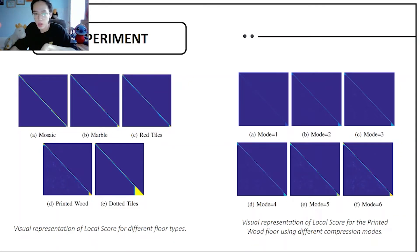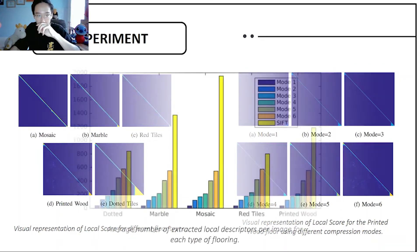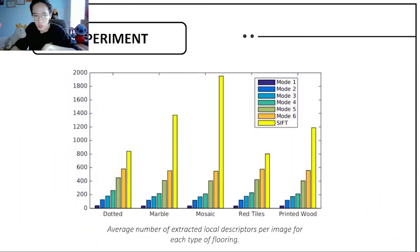It is visual representation of local score for different floor types: mosaic, marble, red tiles, printed wood, and dotted tiles. In the right picture, it is visual representation of local score for the printed wood floor using different compression models. This is experiment two.